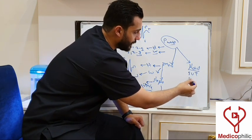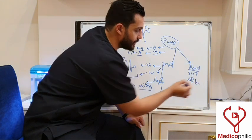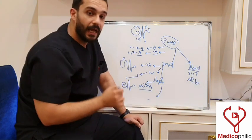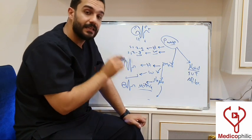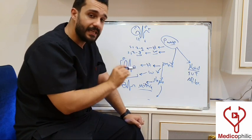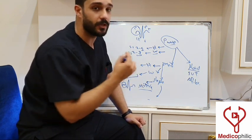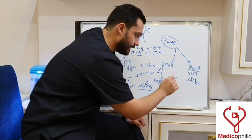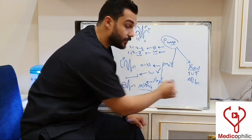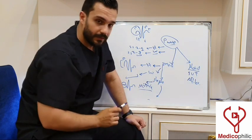Another, much more common abnormality associated with absent P waves is atrial fibrillation. In atrial fibrillation, there is no P wave, the rate is tachycardic, and the rhythm is irregularly irregular.